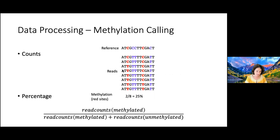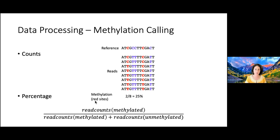In the end, you have the reference genome with reads aligned. For example, if two of eight reads at a site are methylated and six are not, that site is 25% methylated — the same beta value concept as with arrays, used for downstream analysis just like array data.